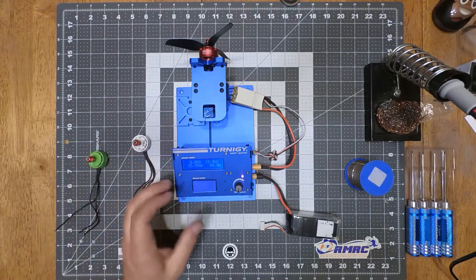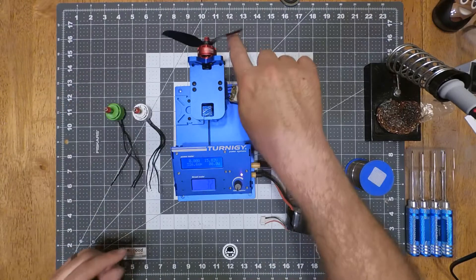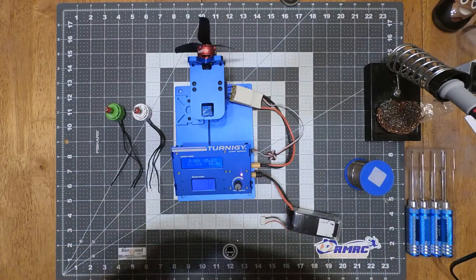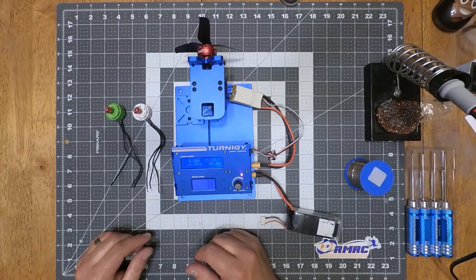You're getting more thrust with the same prop. So there that is. This 2306 racer star motor. Definitely suggest buying those.